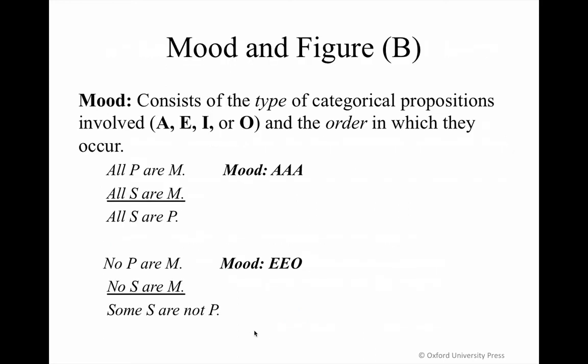Next we have mood and figure. Each argument can be written in terms of its mood and figure. The mood of the argument simply consists of the categorical proposition types involved. When your argument is in standard form, you reflect the mood by way of the order of major premise, minor premise, and conclusion — with each being type A, E, I, or O.